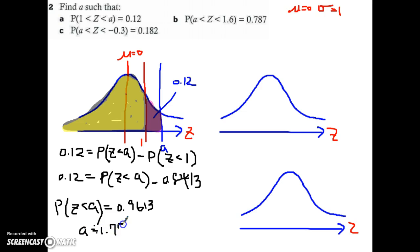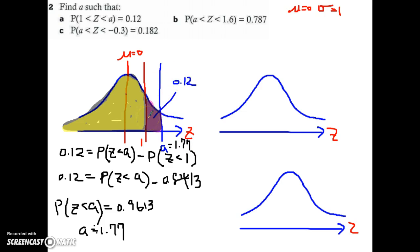So my A is about 1.8 standard deviations above the mean. If you take the area between 1 standard deviation and 1.77 standard deviations, you'll get a probability of 0.12 from that interval. Now let's do part B — I'm going to clear the screen, so if you haven't written down the stuff on the left, please pause the video and do that now.